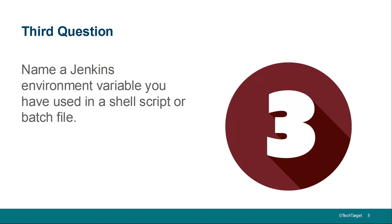Question number three: name a Jenkins environment variable you may have used. There's a whole bunch of Jenkins environment variables available to your script jobs — items such as job name, node name, workspace, build URL, and job URL. Those are all valid environment variables you'll see inside of your Jenkins job. Be familiar with some of those and what they do, and that'll get you through question number three.